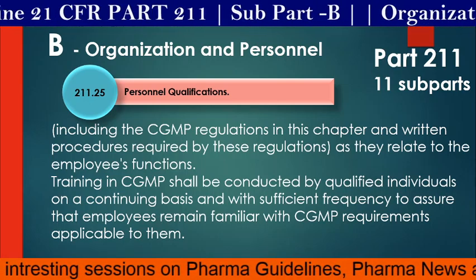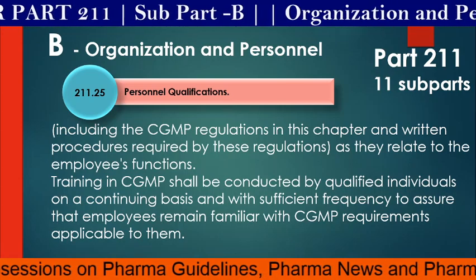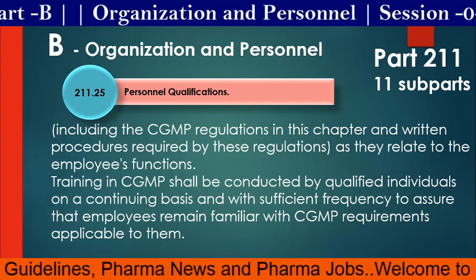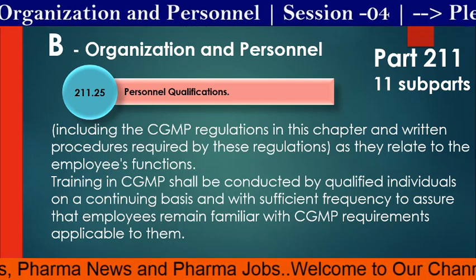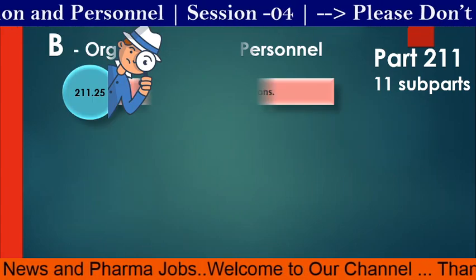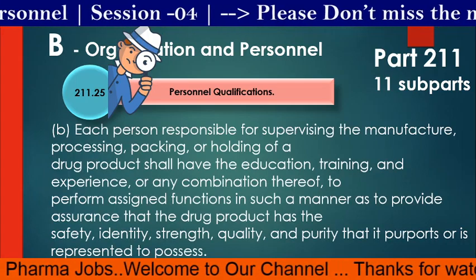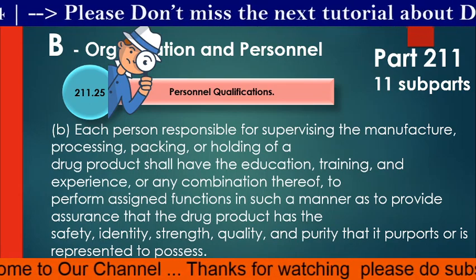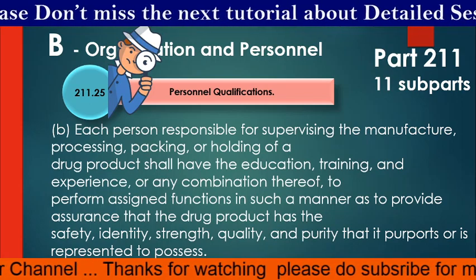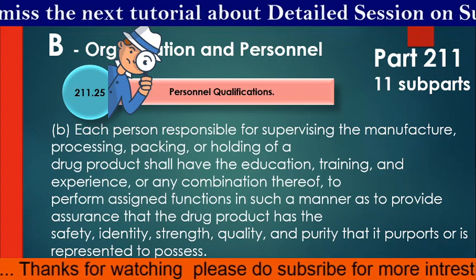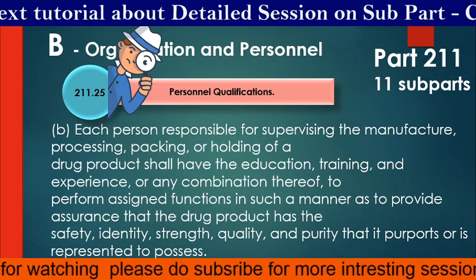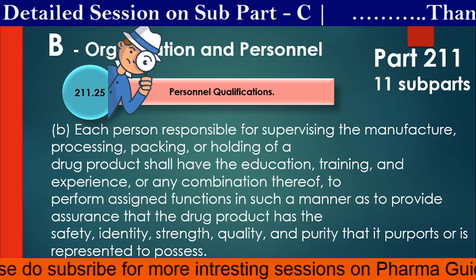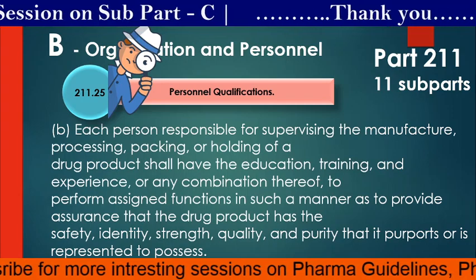Training in CGMP shall be conducted by qualified individuals on a continuing basis, with sufficient frequency to assure that employees remain familiar with CGMP requirements applicable to them. Usually whenever people join pharma, they undergo training, and after training only they perform their assigned responsibilities. Whenever required, they have to retake the training. Each person responsible for supervising the manufacture, processing, packing or holding of a drug product shall have the education, training and experience. In documentation we do 'done by' and 'checked by' — the supervisor must have sufficient education, training and experience.